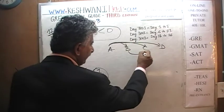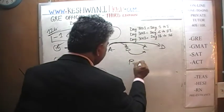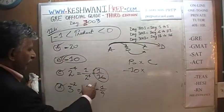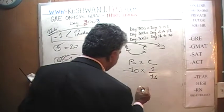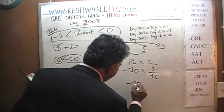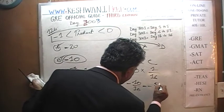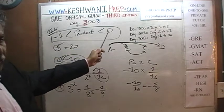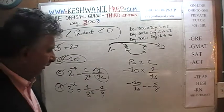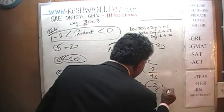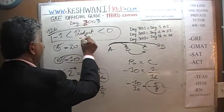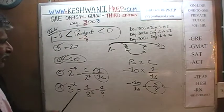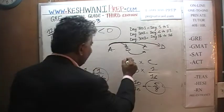B times C: B is negative 10, C is 1/16. That gives us negative 10/16, which is the same as negative 5/8. Negative 5/8 is going to fall between negative 1 and 0 — it is less than 0 and more than negative 1, because negative 1 would have been negative 8/8. B times C works.